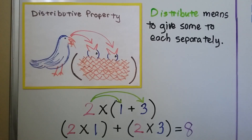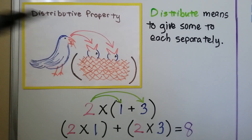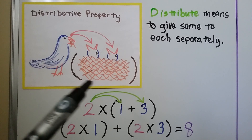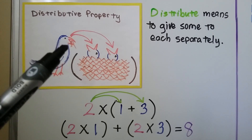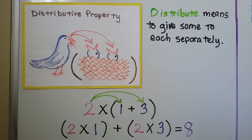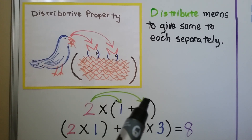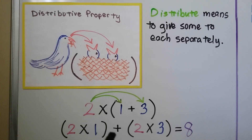You can think of the distributive property as a mother bird distributing food to each of her little baby birds in a parentheses nest. She gives some to that one and she gives some to that one — she's distributing. Distribute means to give some to each separately. So if the 2 was the mother bird, it would go to the 1 and it would go to the 3. We'd have 2 times 1, which is 2, plus 2 times 3, which is 6. We add 2 plus 6 and we get 8.